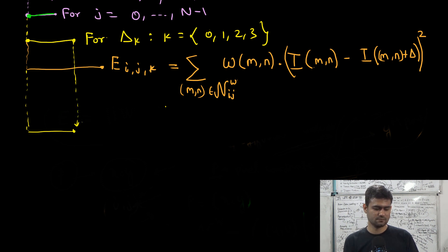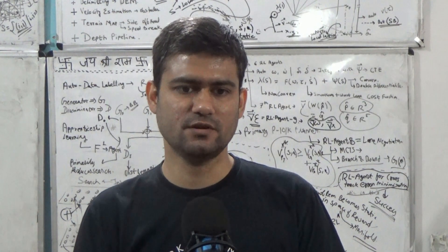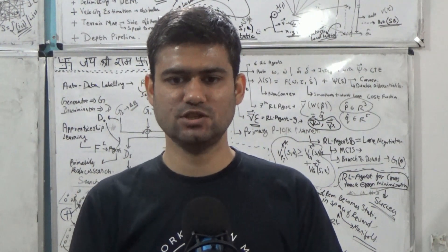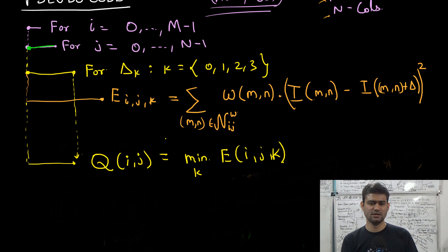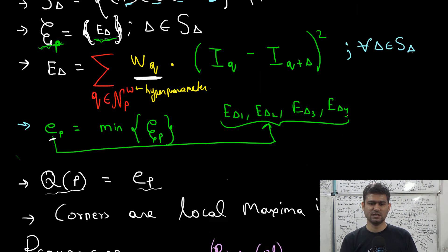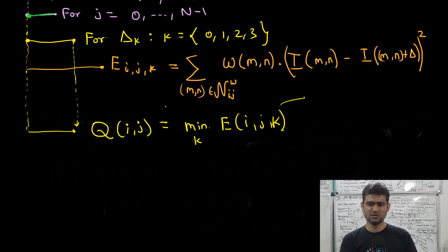We can compute the matrix of image Q_ij is going to be min over k e_ijk. So once we have computed the error terms for each of the k values k=0,1,2 and 3, in the Q value we store the minimum along the third dimension. As we have discussed earlier that Q basically contains the minimum of these error values. So this matrix e is going to be of dimension m cross n cross 4. And we select minimum along the third dimension. And the size of this matrix Q is going to be m cross n.